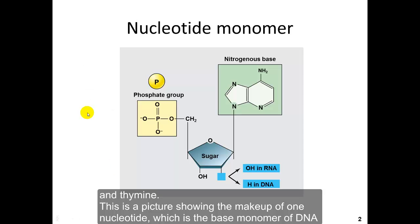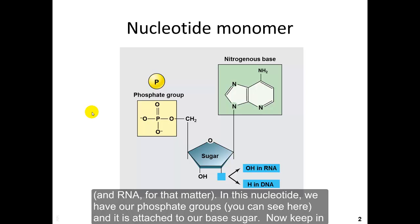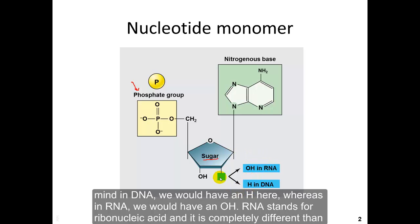This picture shows the makeup of one nucleotide, which is the base monomer of DNA — and RNA for that matter. In this nucleotide we have our phosphate groups. Keep in mind that in DNA we would have an H here, whereas in RNA we would have an OH. RNA is ribonucleic acid, and it is completely different from DNA.